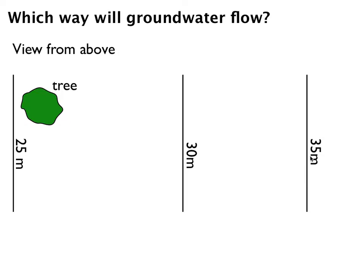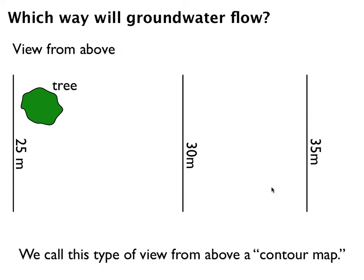Groundwater always flows downslope. These lines tell you the height of the water table, so the slope goes from right to left. We call this type of view from above a contour map.